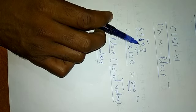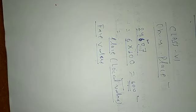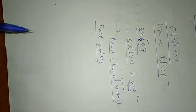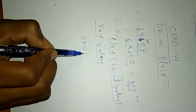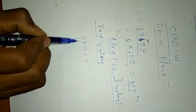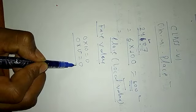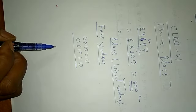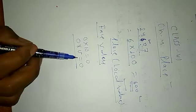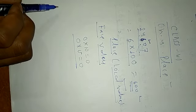Face value and place value of 0 is always 0, because when we multiply any number with 0 the product is 0. For example, 0 into 10 equals 0, and 0 into 15 equals 0. So this is the concept of place value and face value.